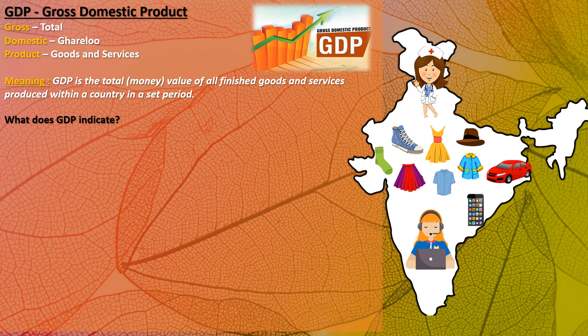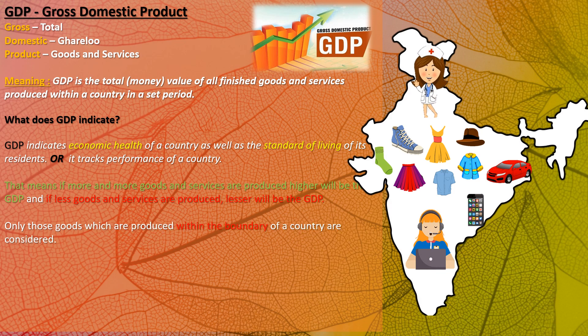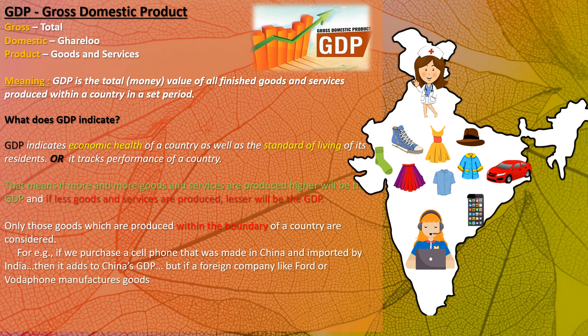GDP indicates the economic health of a country as well as the standard of living of its residents. If more goods and services are produced, higher will be the GDP; if less are produced, lesser will be the GDP. Only those goods produced within the boundary of a country are considered. For example, if we purchase a cell phone made in China and imported by India, then it adds to China's GDP.